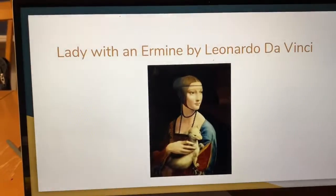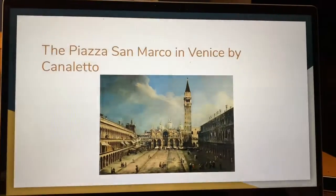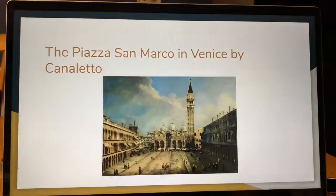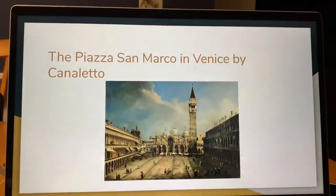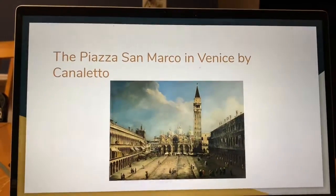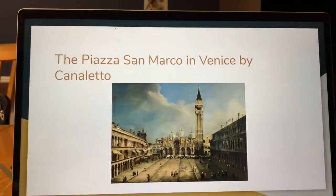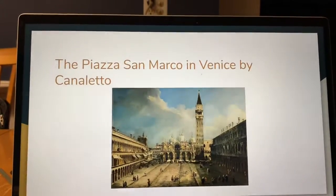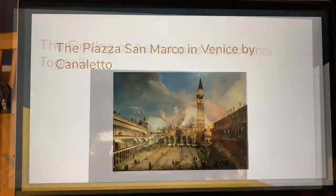The next artwork in my exhibit is the Piazza San Marco in Venice by Canaletto. It is an oil on canvas painting with framed dimensions of 44 and 5/8 inches by 57 and 3/4 inches. It was released in 1739.